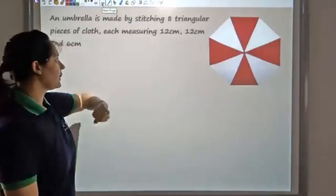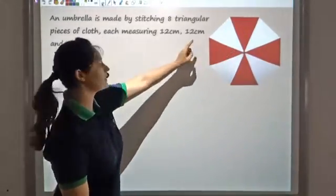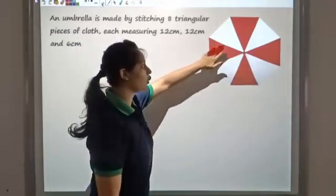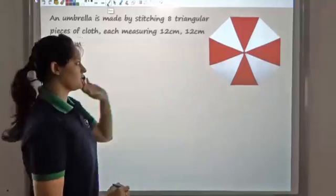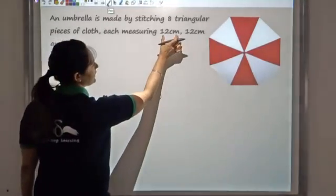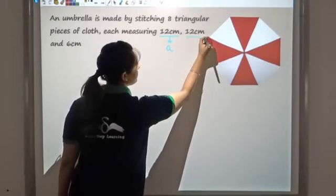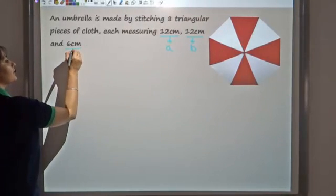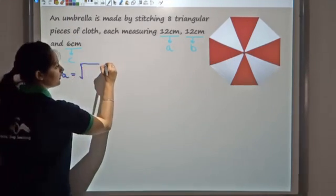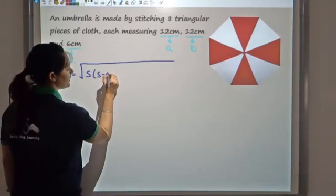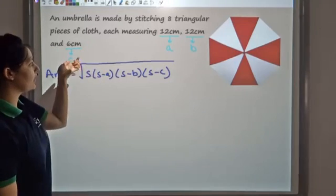Say there is an umbrella made by stitching eight triangular pieces, where each piece measures 12, 12, and 6 cm. Since all eight pieces have the same sides, they are congruent and hence equal in area. We need to find the area of one piece first. Let the sides be A = 12, B = 12, and C = 6. We first find S: S = (A + B + C) / 2.